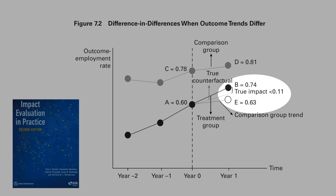The diff-and-diff estimator would return to you 0.11 — that is the distance between B minus E — but the true impact would be smaller than 0.11.